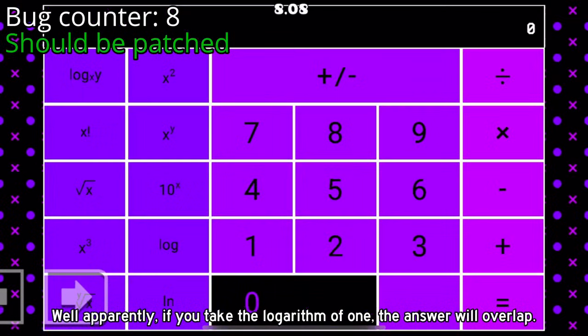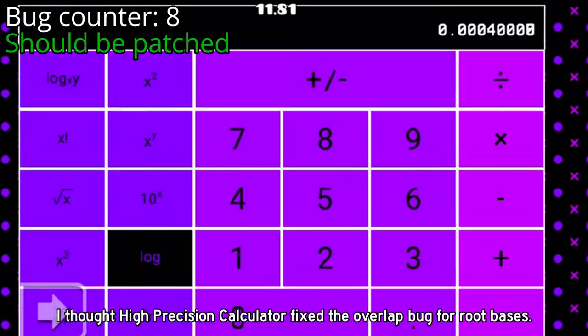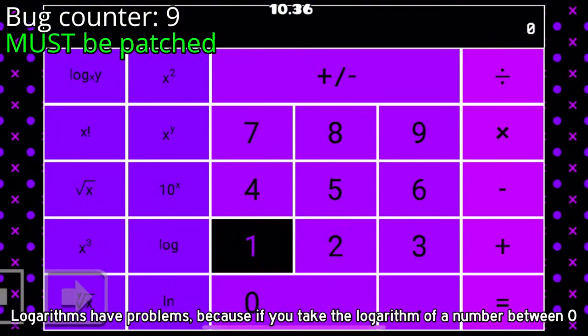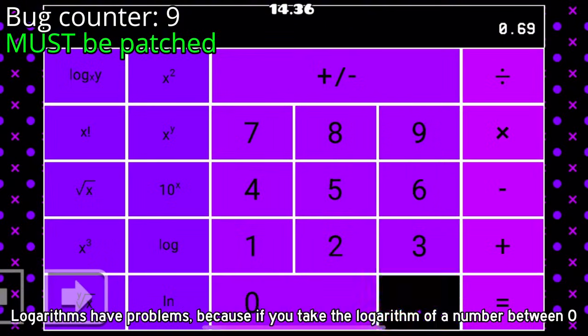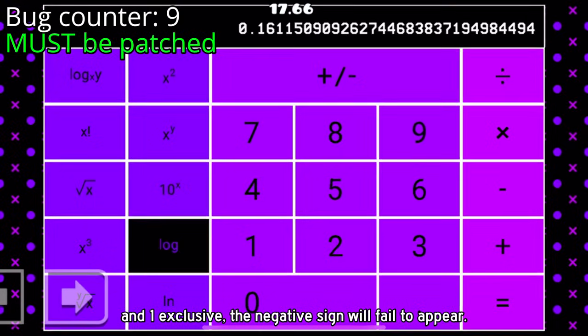Well apparently, if you take the logarithm of 1, the answer will overlap. I thought High Precision Calculator fixed the overlap bug for root bases. Logarithms have problems, because if you take the logarithm of a number between 0 and 1 exclusive, the negative sign will fail to appear.